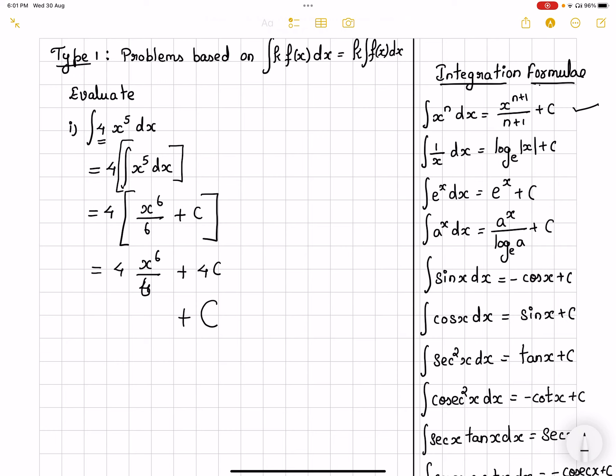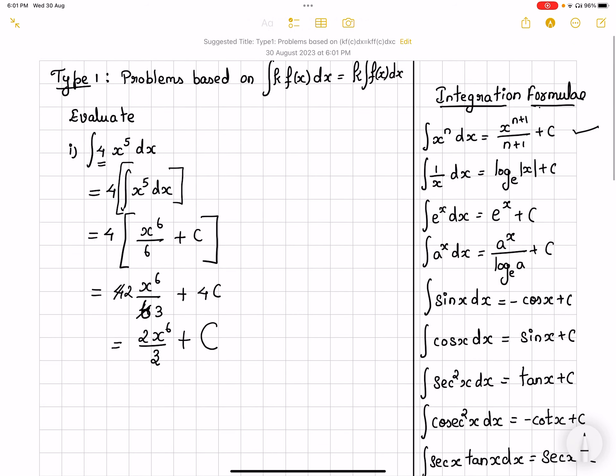So now here, I'm sorry it is 6 here. Then in that case it would be getting cancelled. We would be getting 2x raised to the power 6 by 3. So this is going to be my answer for this first question. Let's move on with the second question.